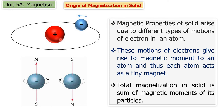We know that a solid is made up of a number of atoms, and atoms are made up of protons, neutrons, and electrons that revolve around the nucleus in different orbits. Electrons also revolve around themselves. So there is a motion of charged particles because the electron is a charged particle, and that gives a magnetic moment to an atom. So each atom acts as a tiny magnet. Each atom has a magnetic moment, and the total magnetization of a solid is nothing but the sum of magnetic moments of its particles.